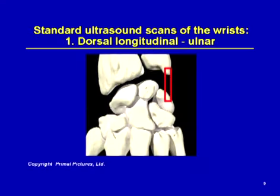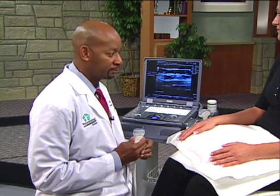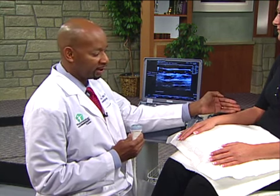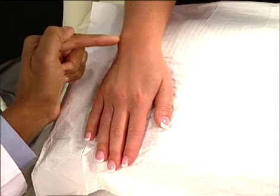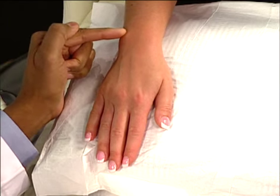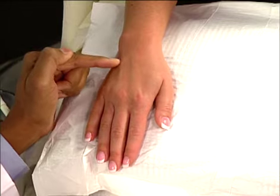The first standard scan is a dorsal longitudinal scan looking over the ulnar aspect of the wrist. Now let's move to the model so I can demonstrate these on the ultrasound machine. Let me review with you the position of the patient. I like to have the patient seated at an examination table with the elbow flexed 90 degrees and the hands resting on a small pillow, so I can easily access the dorsal or the palmar aspects of the hand.